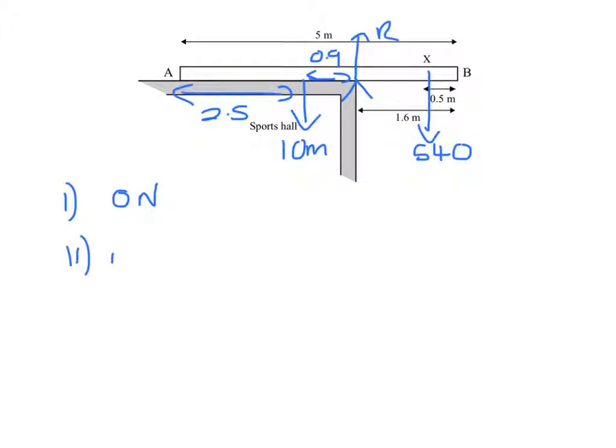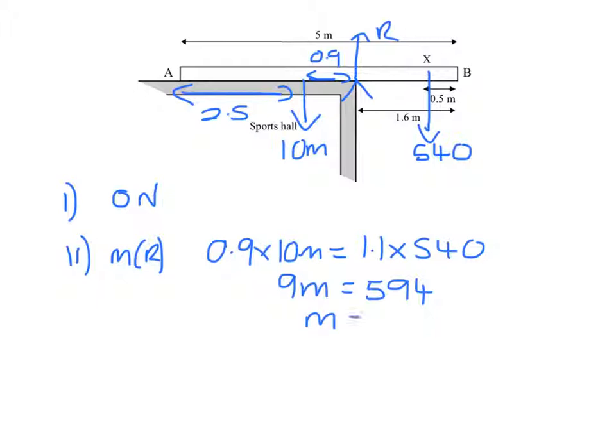I'm going to take moments about this reaction. R and 0.9 times 10m will have to equal 1.1 times 540. So 9m equals 594 and M, the mass, will be 594 divided by 9, which is 66 kilograms. We now have a new situation.